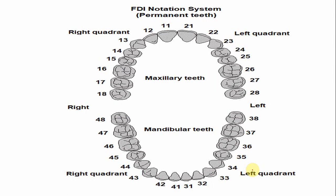The next numbering system is the FDI notation system, also known as the Federation Dental International notation system. The left mandibular canine is 33 — where 3 indicates the mandibular left quadrant and 3 indicates the canine. The right mandibular canine is 43 — where 4 indicates the mandibular right quadrant and 3 means the canine.